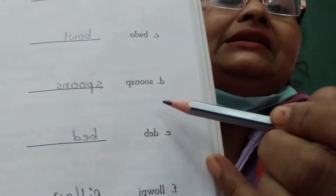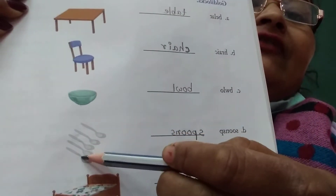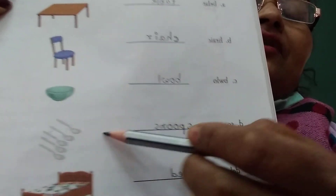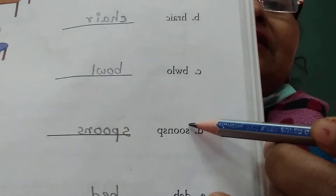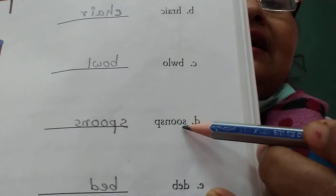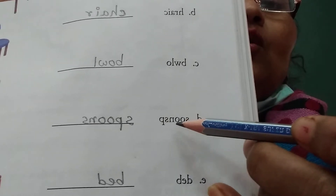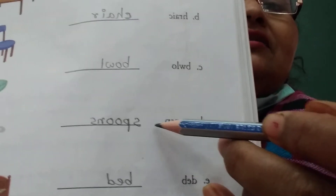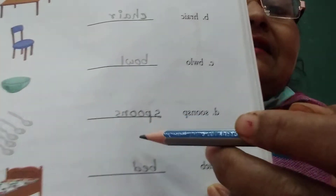Number C is bowl. Number D — you can see there are five spoons. The letters given here are S O O N S P — no meaning. So you have to unscramble it. We have written S P O O N S — spoons. As there is more than one spoon, it is spoons.